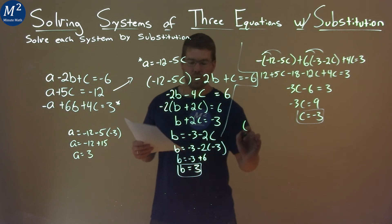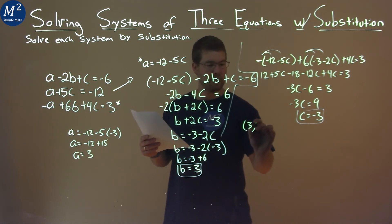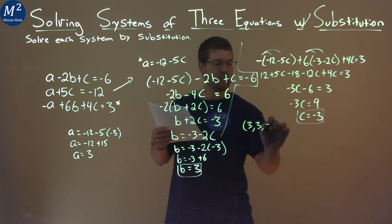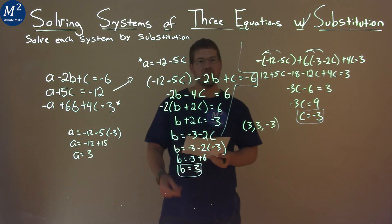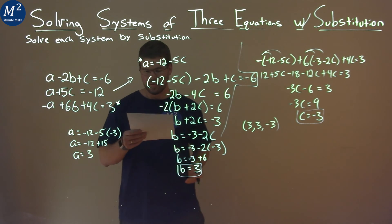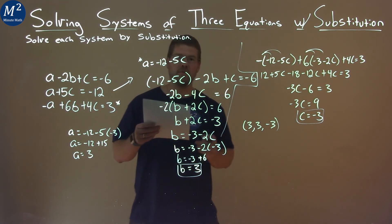So, we can write all three of these as a coordinate point. We have 3, 3, negative 3. Meaning that our final answer is A equals 3, B equals 3, and C equals negative 3.